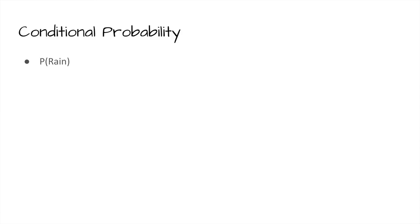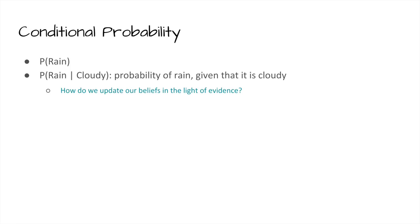The last notion we'll need is conditional probability. What's the probability of rain? Already you should ask: what's my sample space — days in Cambridge, in California? Let's say Cambridge in October. What's the probability of rain on a random day? And what's the probability of rain given that we observe it's cloudy? Conditional probability describes how we update our beliefs in the light of evidence, which is absolutely fundamental to the scientific method.